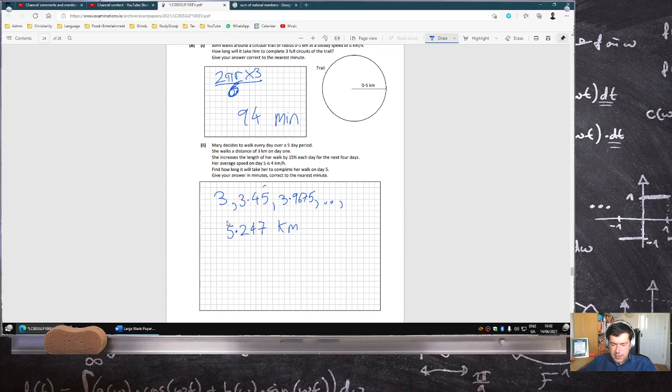Distance over speed is time, to the nearest minute, 79 minutes.